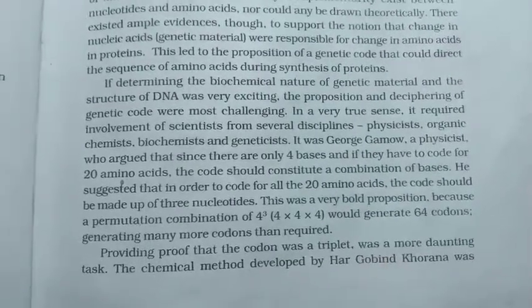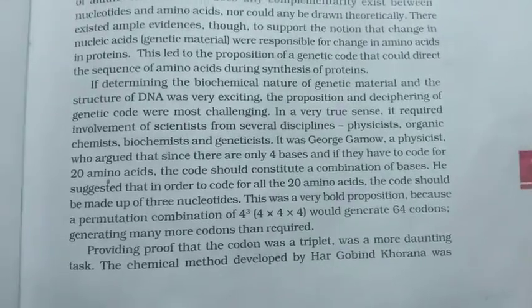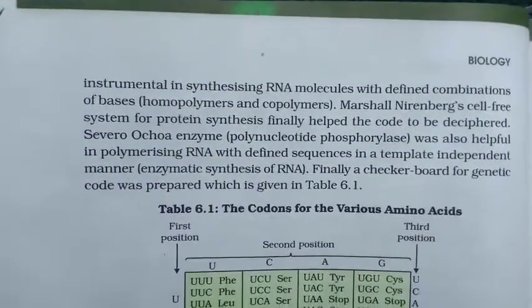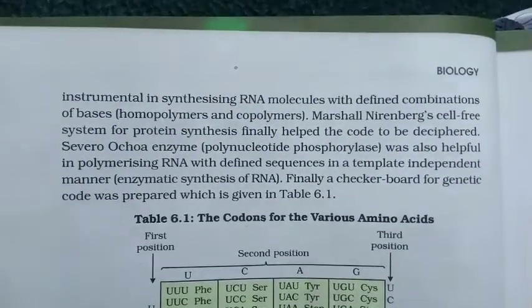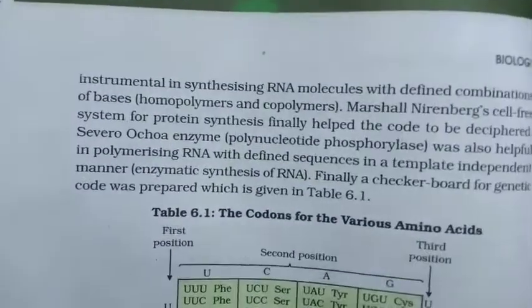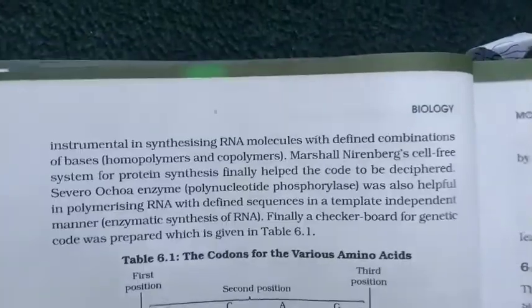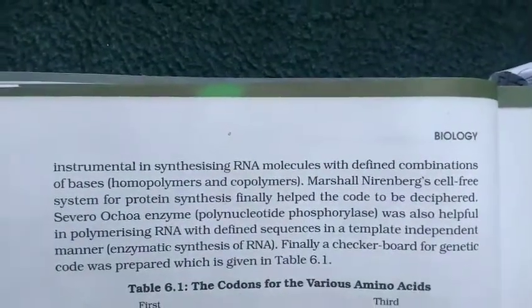Providing proof that the codon was a triplet was a more daunting task. The chemical method developed by Har Gobind Khorana was instrumental in synthesizing RNA molecules with different combinations of bases — that is homopolymers and copolymers. Marshall Nirenberg's cell-free system for protein synthesis finally helped the code to be deciphered. The enzyme polynucleotide phosphorylase was also helpful in polymerizing RNA with defined sequences in a template-independent manner.